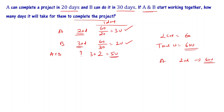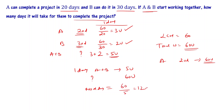In 1 day A and B together are completing 5 units, and the total work is 60 units. So the number of days is 60 divided by 5, that is 12 days. So A and B together can complete this work in 12 days.